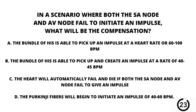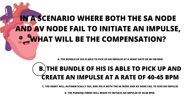Question number nineteen. In a scenario where both the SA node and the AV node fail to initiate an impulse, what will be the compensation? A. The bundle of His is able to pick up an impulse at a rate of 60 to 100 beats per minute. B. The bundle of His is able to pick up and create an impulse at a rate of 40 to 45 beats per minute. C. The heart will automatically fail and die if both the SA node and AV node fail to give an impulse. Or D. The Purkinje fibers will begin to initiate an impulse of 40 to 60 beats per minute. Our answer here is B. The bundle of His is able to pick up an impulse at a rate of 40 to 45 beats per minute.